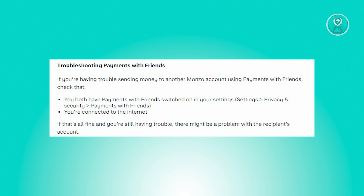Another thing you should check is your settings for payments with friends. Go ahead and open up the mobile application, go to Settings, then Privacy and Security, and make sure that Payments with Friends is actually enabled. Once you've enabled and checked all of those settings, you should be good.